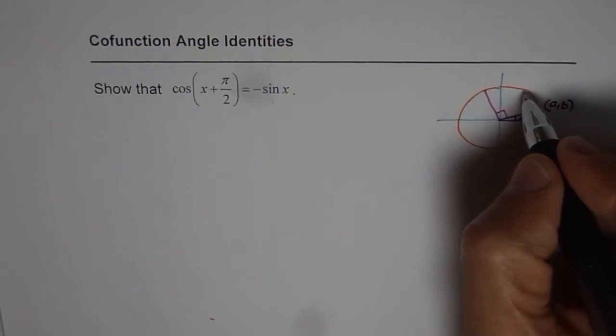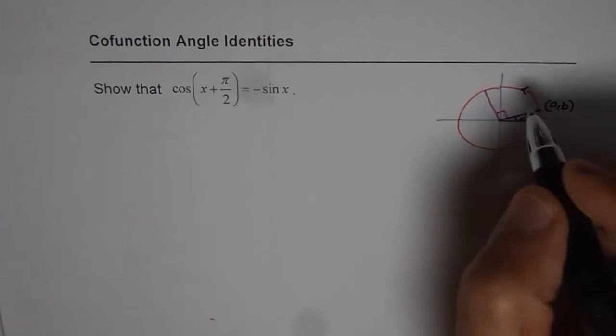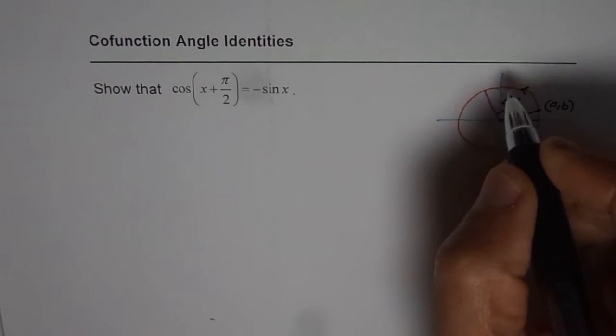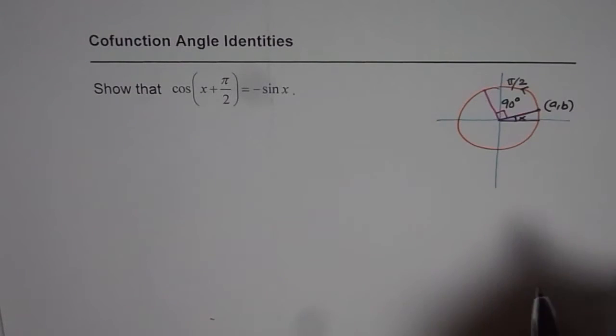Now counterclockwise rotation, that is in this direction, by 90 degrees, that means 90 degrees or pi by 2 in radians. Let me write pi by 2 also.